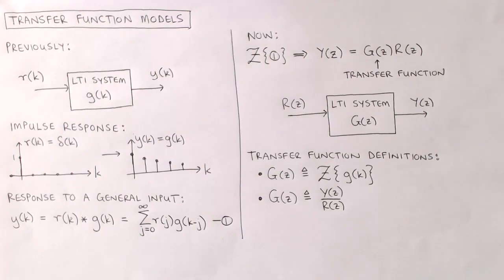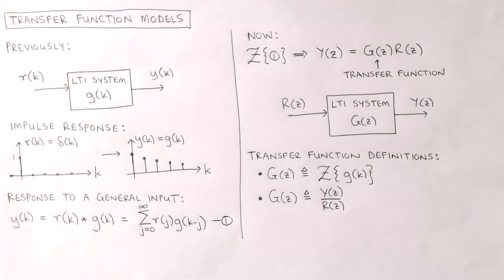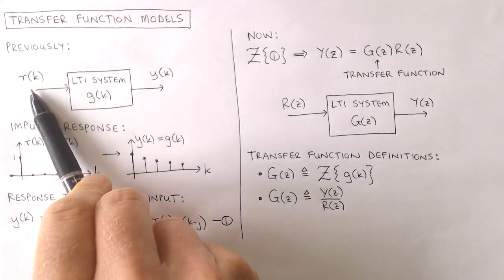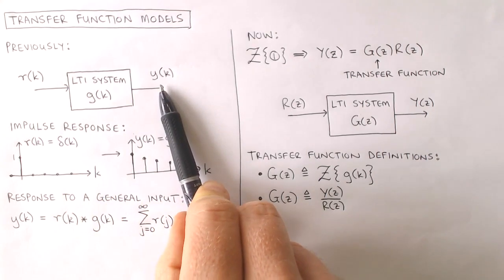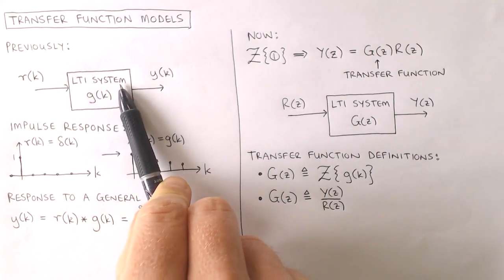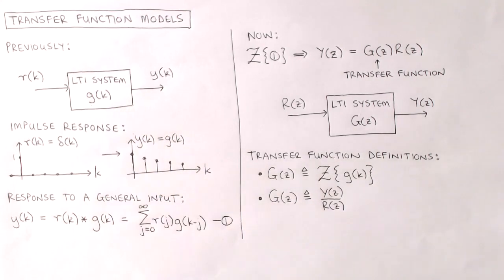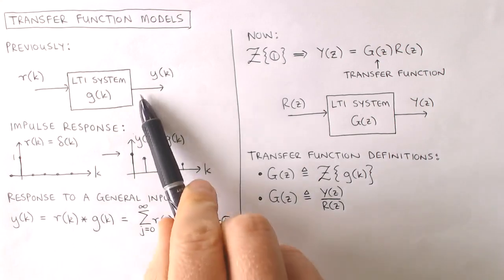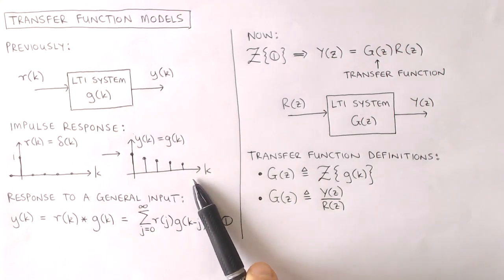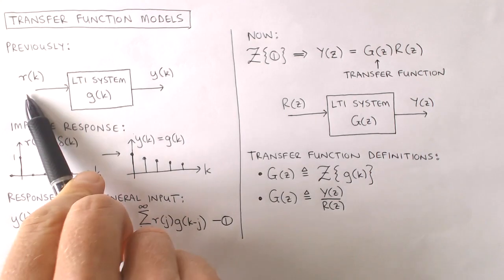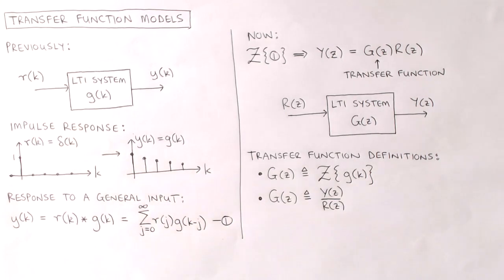We have previously described the dynamics of a linear time invariant system in the time domain using either impulse response or difference equation models. For the development of the transfer function formulation we will start with the impulse response model. We consider digital systems with a single input r, a single output y, and impulse response g. The impulse response is defined as the output of the system in response to a digital impulse applied to the input, assuming the system is initially at rest.